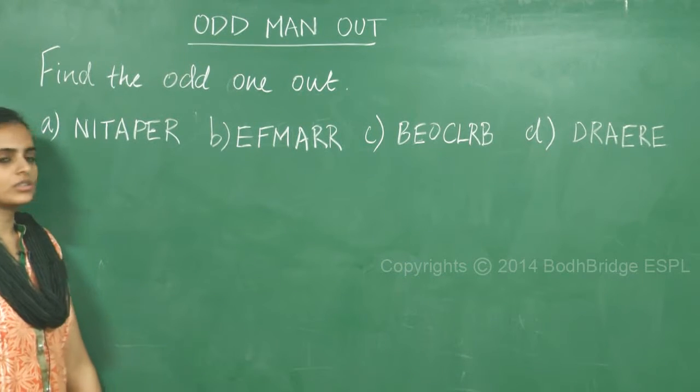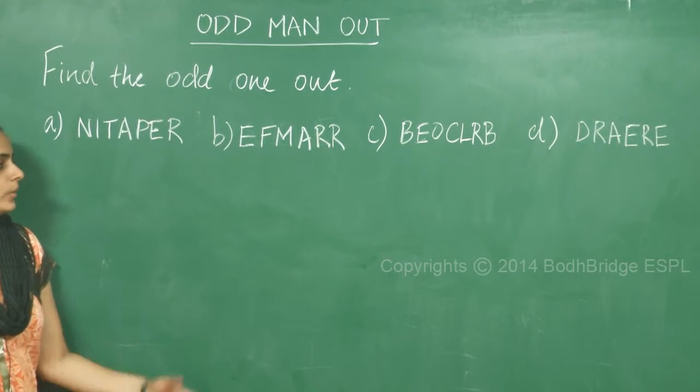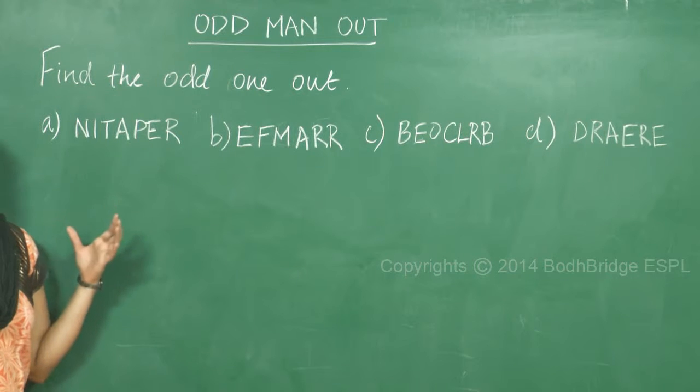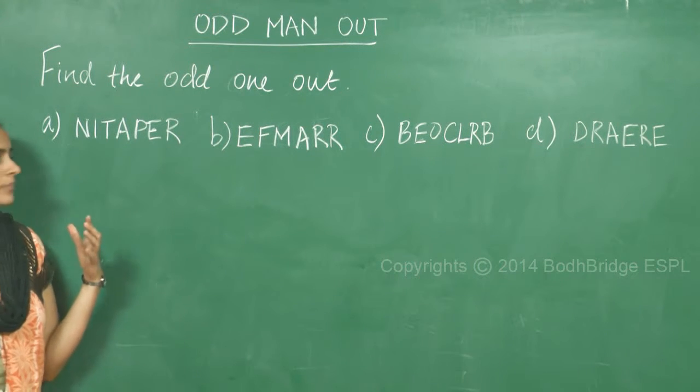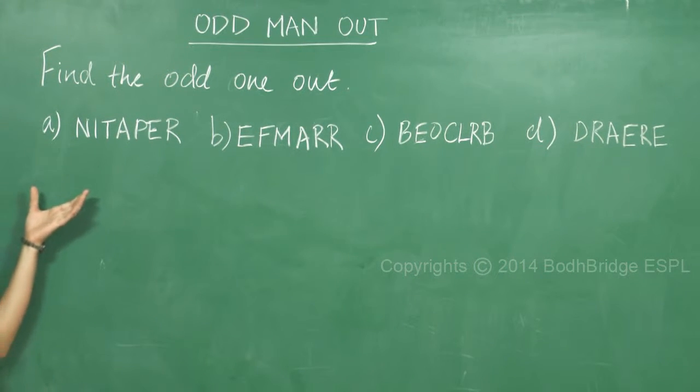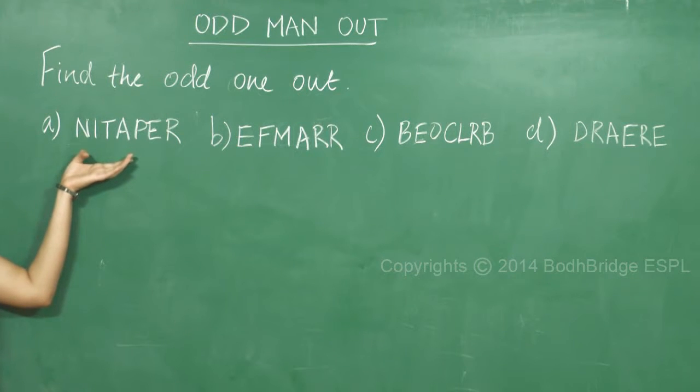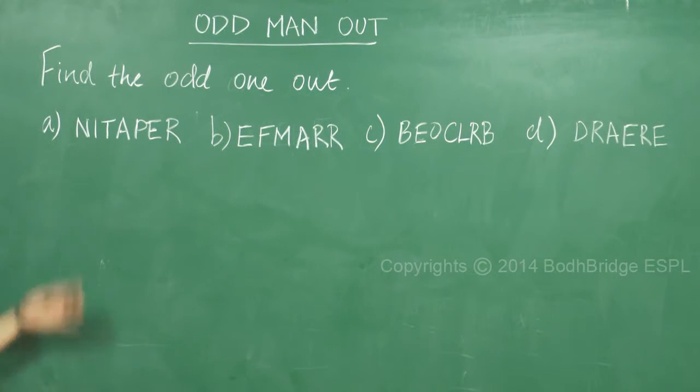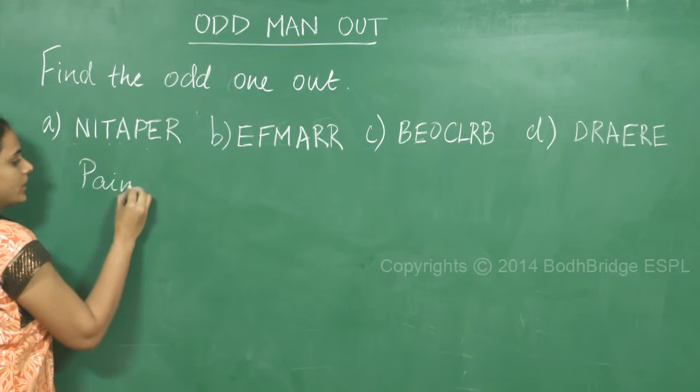Now if we broadly look into each of these options, we can see that they are all jumbled letters and they form a word. So if we jumble them, let us take the first option. Option a, if we jumble it, we get p a i n t e r, which is painter.